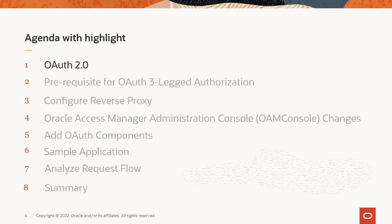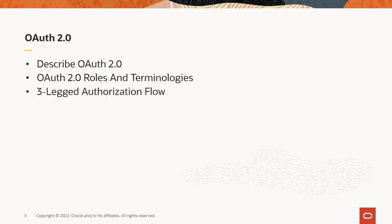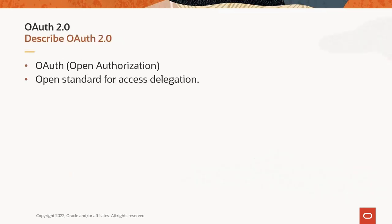Let us start with the first topic: OAuth 2.0. It has the following subtopics: discuss OAuth 2.0 briefly, go over different roles and terms used, and understand the three-legged authorization flow. OAuth, open authorization, is an open standard for access delegation. It offers a way to exchange user credentials for an access token, and allows a website or application to access resources hosted by other web apps on behalf of a user.